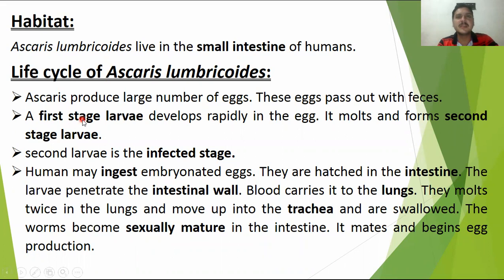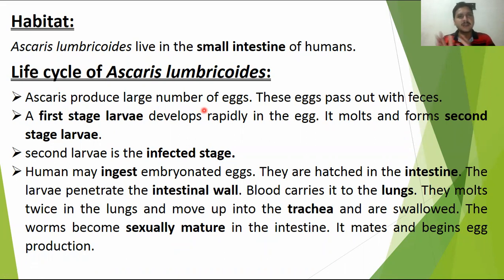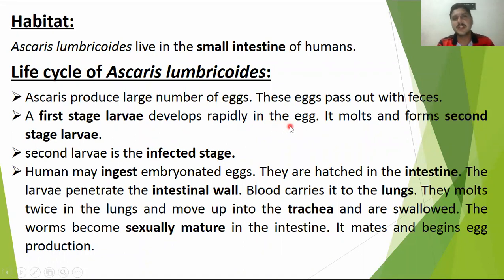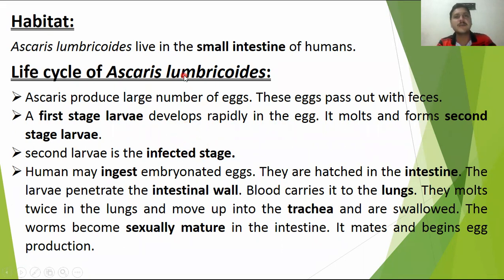The life cycle of Ascaris lumbricoides is a very important topic. Ascaris produces a large number of eggs. The eggs are produced in the human host and eliminated from the body through feces. A first larval stage develops, then molting occurs, and a second larval stage develops. The second larval stage is actually the infective stage — the infection-causing stage.